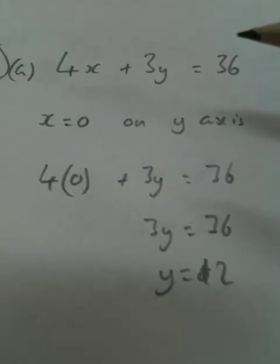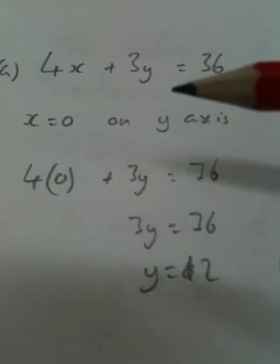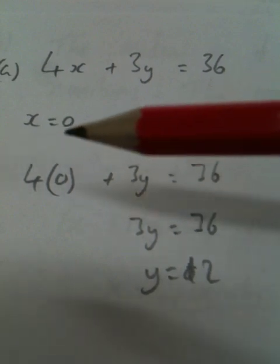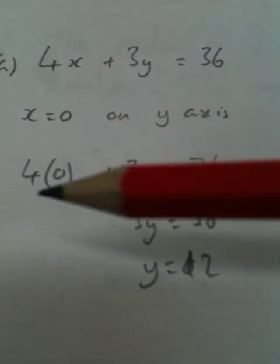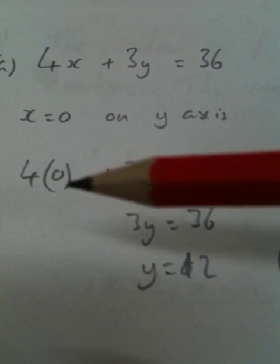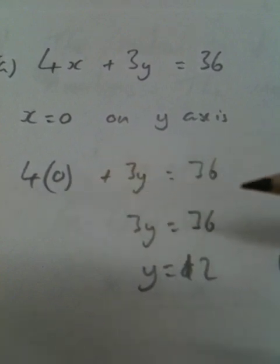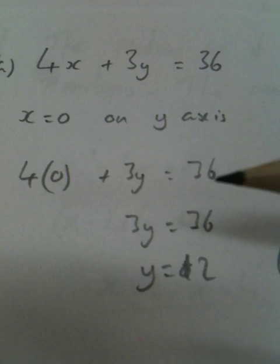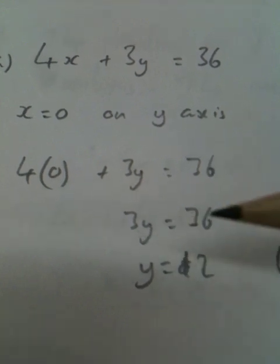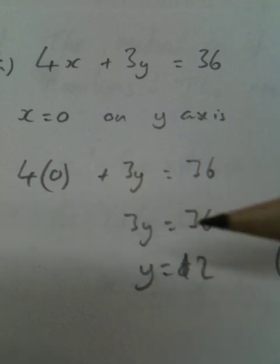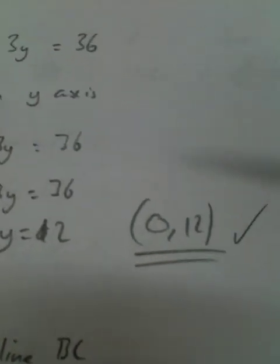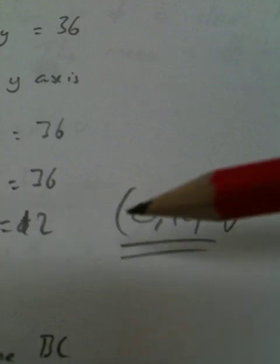No matter which point you picked on the line, you put the x and the y-coordinate in there, it'll always come to 36. That's how they link together. So looking at point A, point A, we don't know how high up it is, but we know that the x-coordinate is 0 because it's sitting on the y-axis. So we'll do 4 times 0, which is nothing. Add 3y equals 36. So 3y equals 36. So 36 divided by 3 will be 12. So the coordinate will be 0, 12. One mark for doing that.